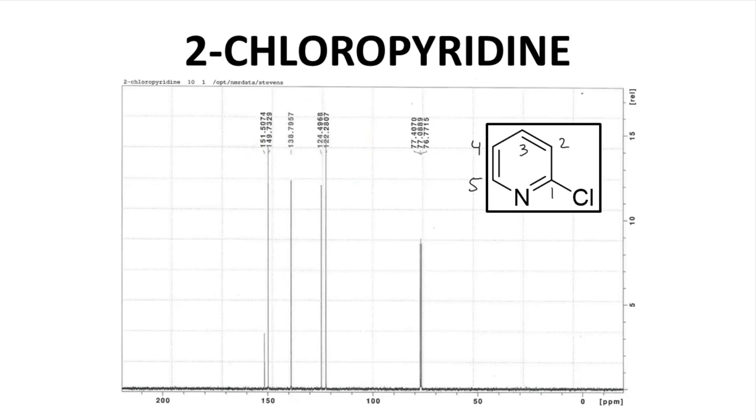Note that 2-chloropyridine does have a quaternary carbon. The carbon attached to the chlorine does not have any hydrogens. It is quaternary. Which peak is likely the quaternary carbon? It's probably this short one at about 151 ppm.